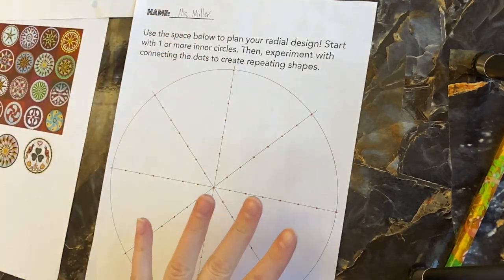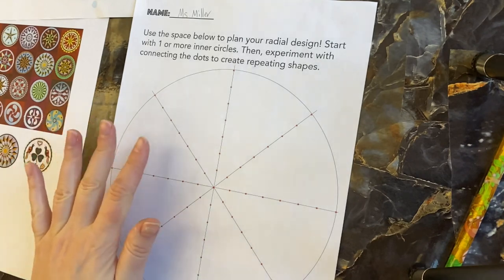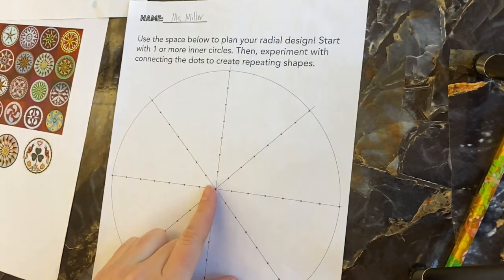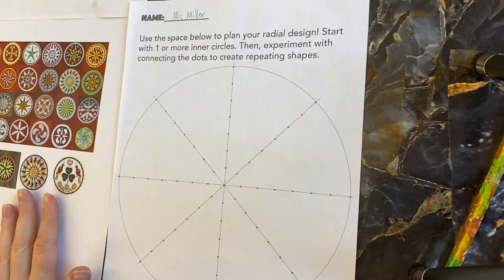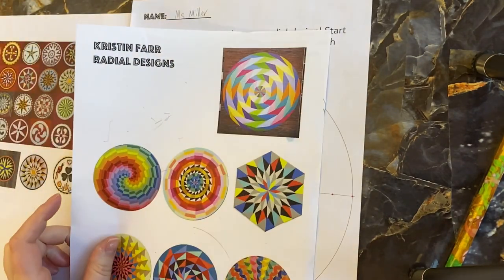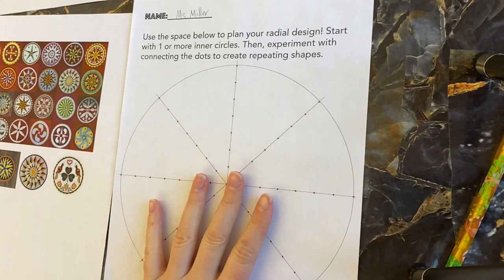Use the space below to design a radial design. Remember, a radial design repeats in a circular pattern. Start with one or more inner circles, then experiment connecting the dots to create shapes. Remember your reference sheets—we talked about hex signs and Christening fires radial designs. Make your own radial symmetry design here.